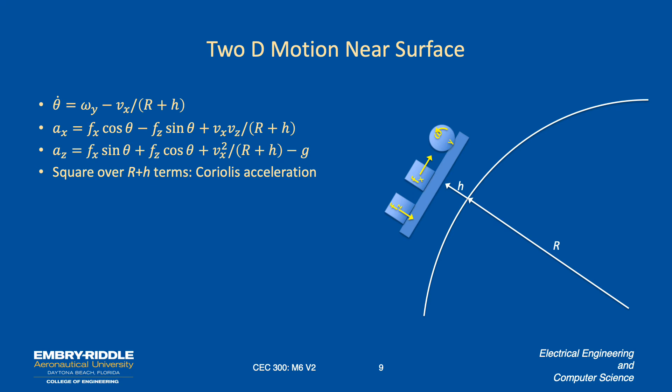And so those, the square over R plus H terms, those are the Coriolis accelerations. We want to integrate the NED accelerations to get the NED velocities and the NED velocities to get the NED positions. So again, it ought to be doable.